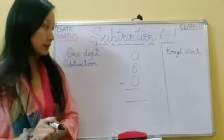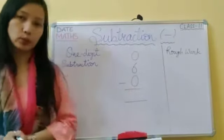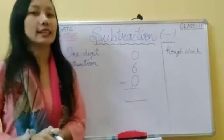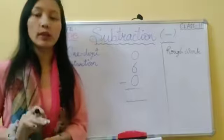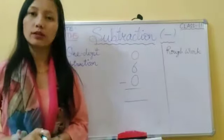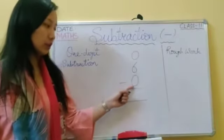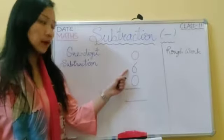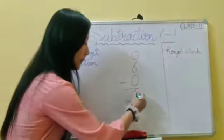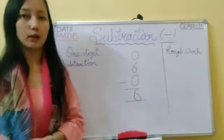Another example: six minus zero. As you all know, zero means nothing. When zero is subtracted from any number, the answer is the number itself. That means six minus zero — the answer will be number six. The difference will be six.